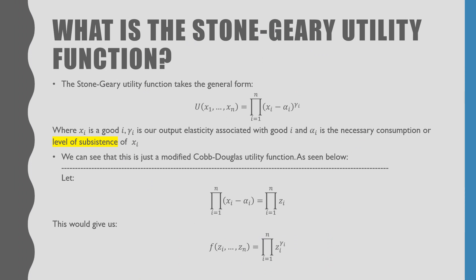The Stone-Geary Utility Function takes the general form of U is equal to the product of Xi minus Alpha i, raised to Gamma i, where i goes from 1 to n. Xi is good i, Gamma i is the output elasticity associated with good i, and Alpha i is the necessary consumption or level of subsistence of good Xi.